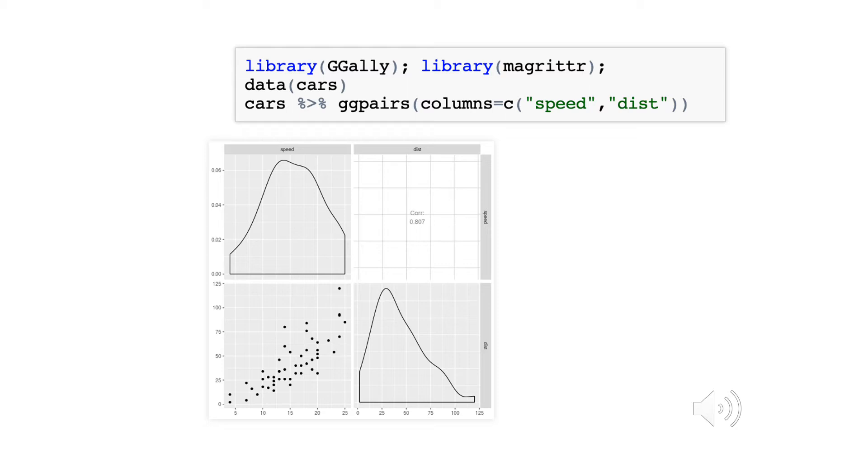We illustrate this here using R's built-in data frame on cars. We're using the library magrittr so that we can pipe, and we're using another library, GGally, so that we can make use of the function ggpairs.